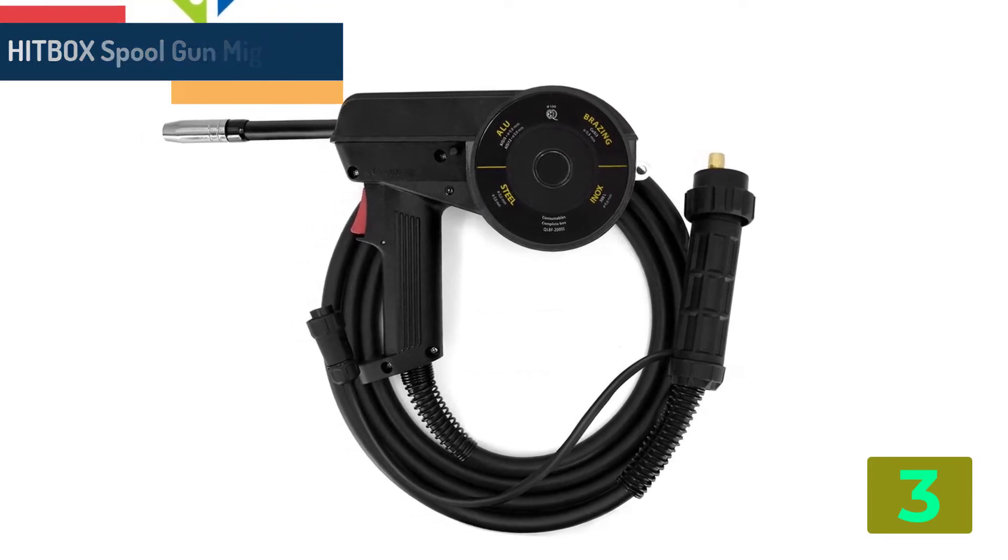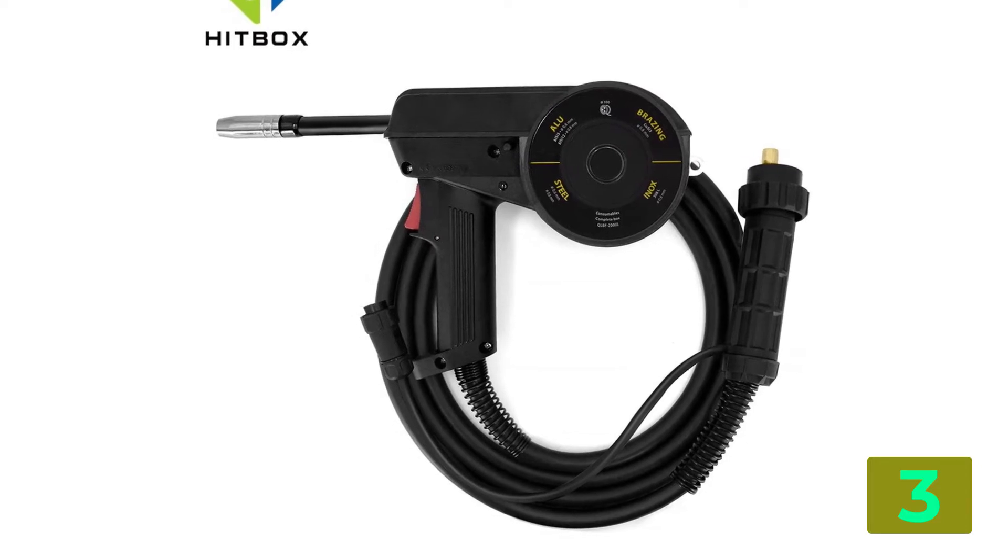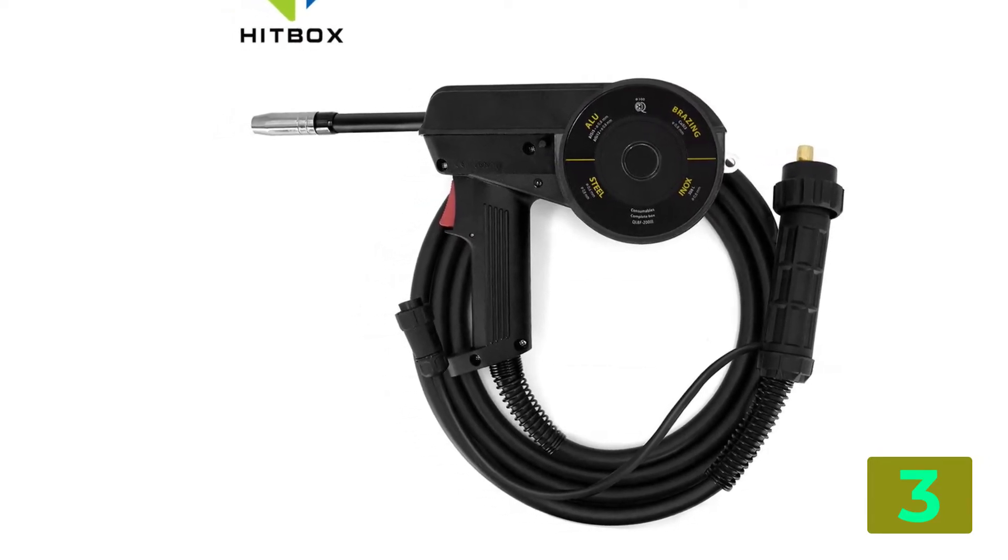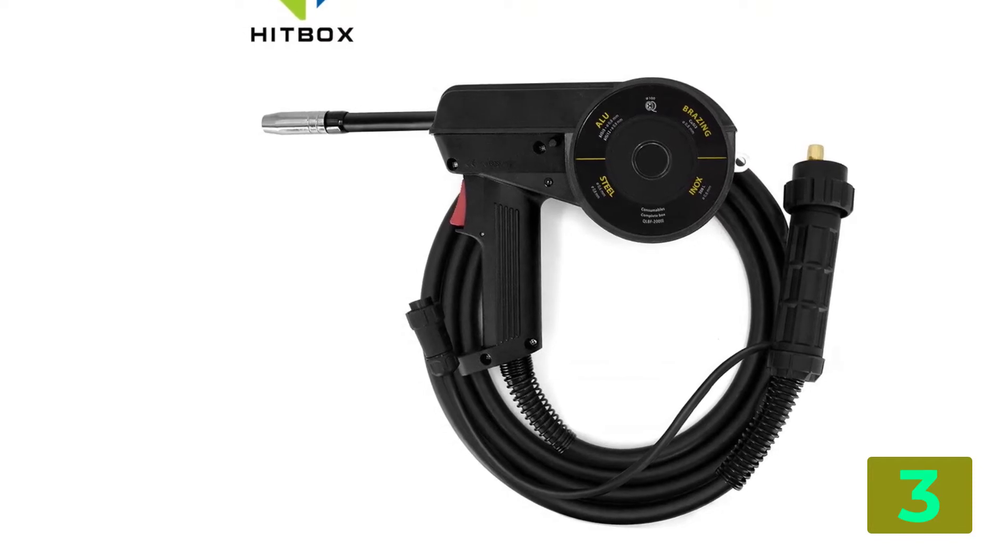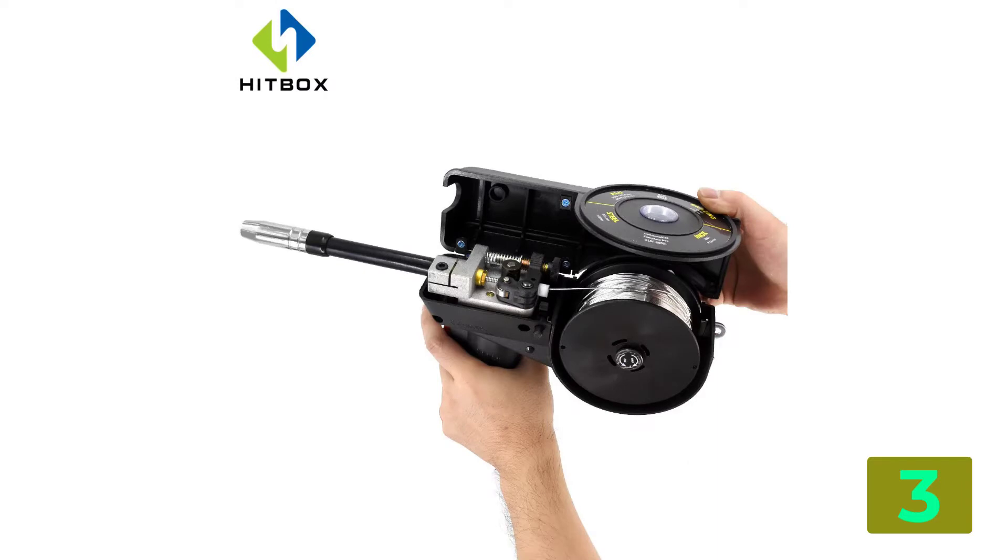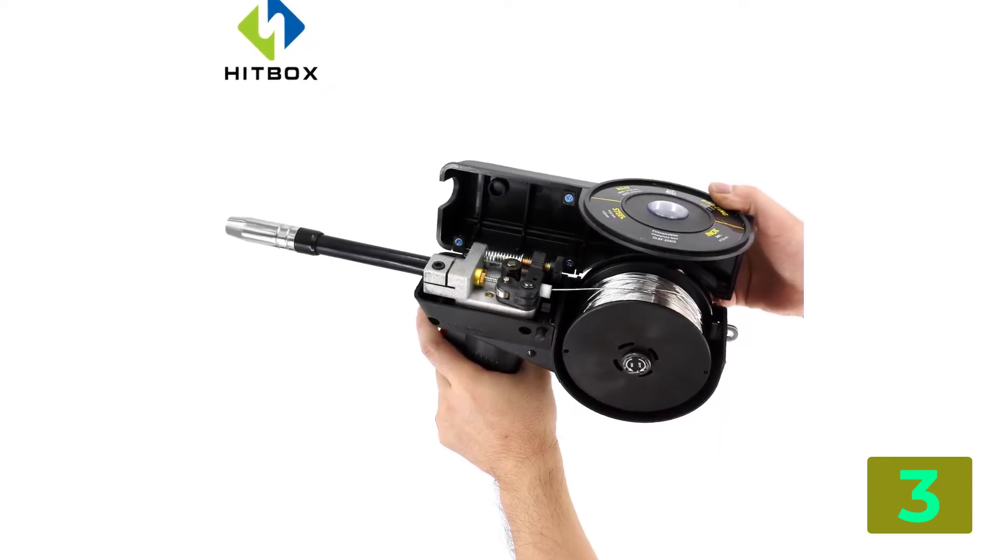Specifications: Brand name Hitbox, Certification CE, Origin CN Origin, Type Welding Torch, Model number Hitbox Spool Gun, Welding type CO2 Torch, Welding capacity for aluminum, stainless steel, and iron.